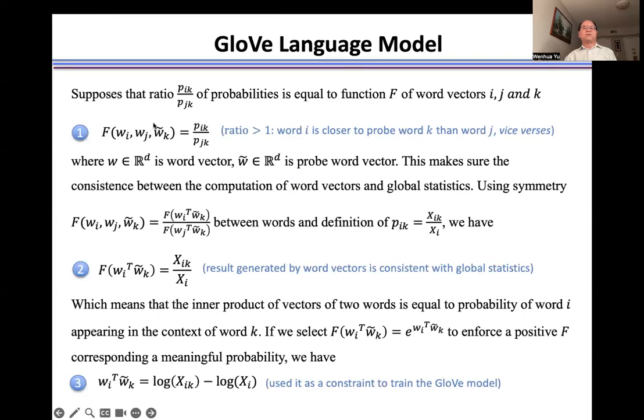Now we use three steps to explain details of the GloVe language model. First, we need to make sure the distance measurement is consistent in feature space and global statistics. For example, we have three vectors for words i, j, and k.